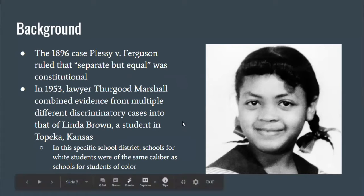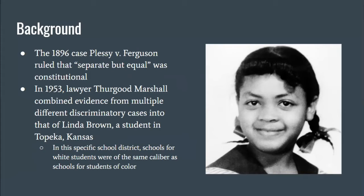Seen here, Linda Brown was a student in Topeka, Kansas. Her case was that she lived a lot closer to a white school that she could walk to, but instead she was forced to take a bus and walk multiple miles every day to her black school. In this specific school district, schools for white students were of the same caliber as schools for students of color, which was really important to the case because it made everyone focus on the implications of separating children and not the difference in education levels.